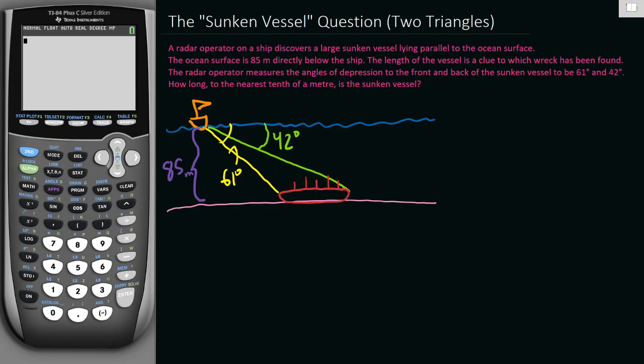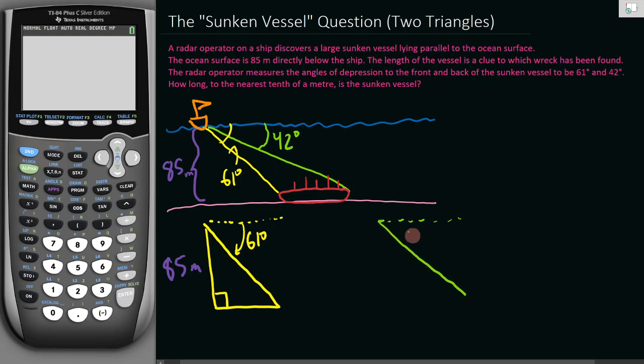We actually have two different triangles here. This is one of the key skills for working with multi-triangle problems - figuring out how to redraw the triangles in ways that make it easier to solve. This triangle here is 61 degrees, and since that angle is 61 degrees it has to be taller than it is wide. This is 85 meters here, and this is 42 degrees. These are both right angle triangles. From context we can assume that the ocean floor is flat, otherwise we can't really solve this.